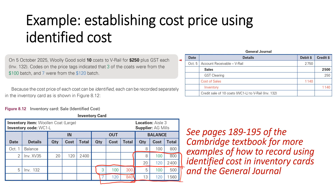We now update our balance: because three of the $100 coats have left the business, we now have five of those left, and because seven of the $120 coats have left, we now have 13 in our balance. In the general journal, cost of sales and inventory is calculated at $1,140 — that's three coats at $100 ($300) plus seven coats at $120 ($840).